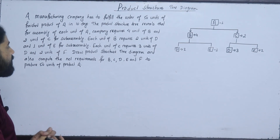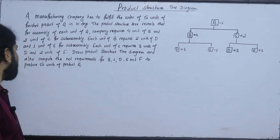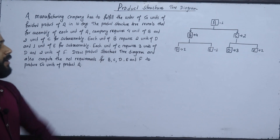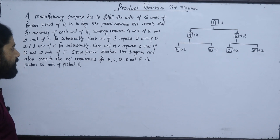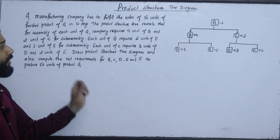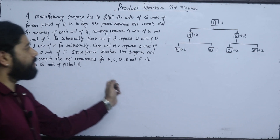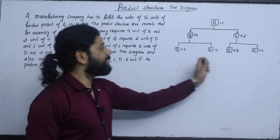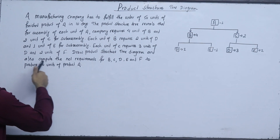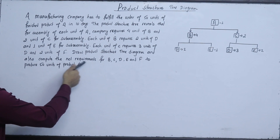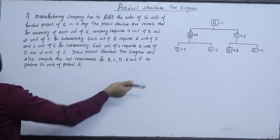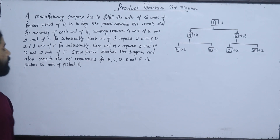We can draw the product structure tree diagram and also compute the units required. This is the structure of A, B, and C. This is the 4 units of B and C.